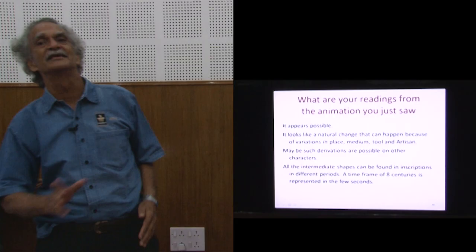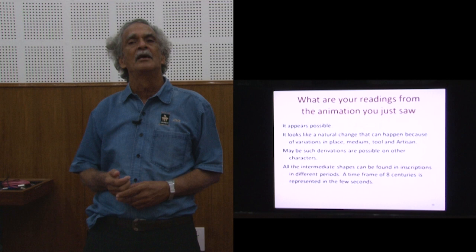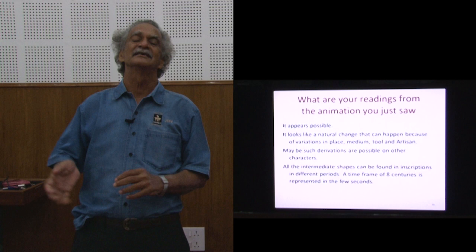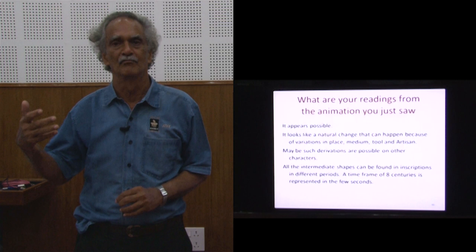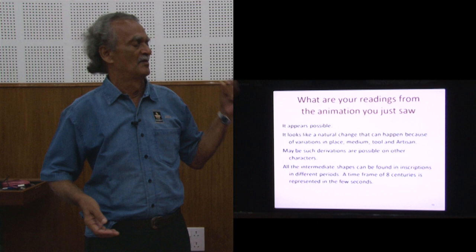This is an animation of a character of Brahmi A leading itself to Devanagari A over time. The chain that you see is gradual — possibly each of those steps corresponds to approximately one century. We do not know exactly, but that is what the entire thing is about. From this animation I want to learn some things. That animation could be the kind of change that was introduced by the artisan, the medium, or time, or whatever it is.